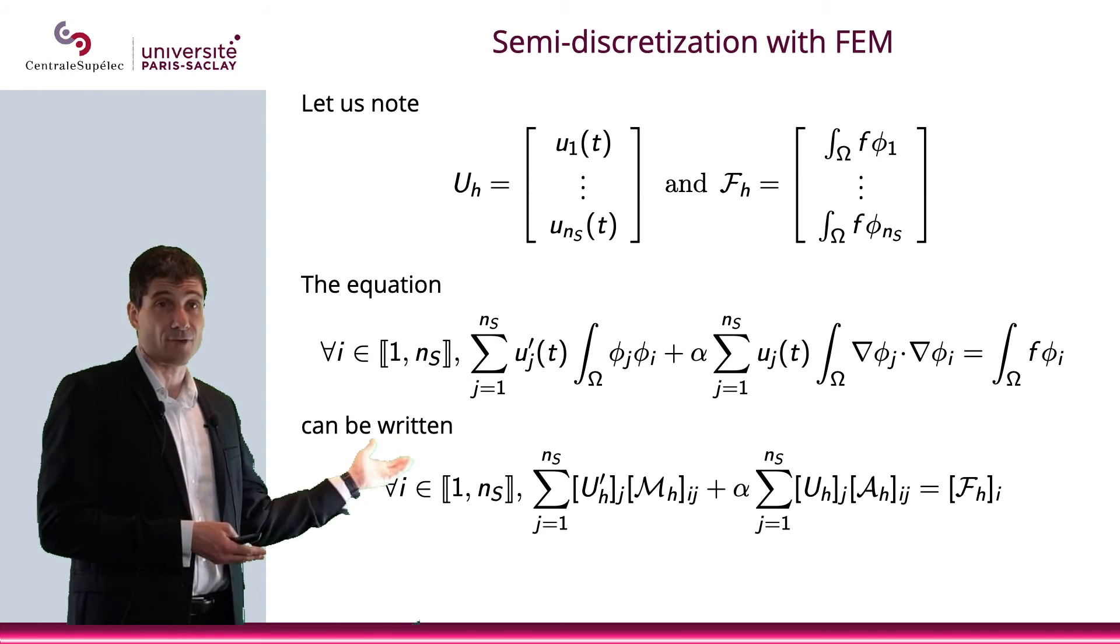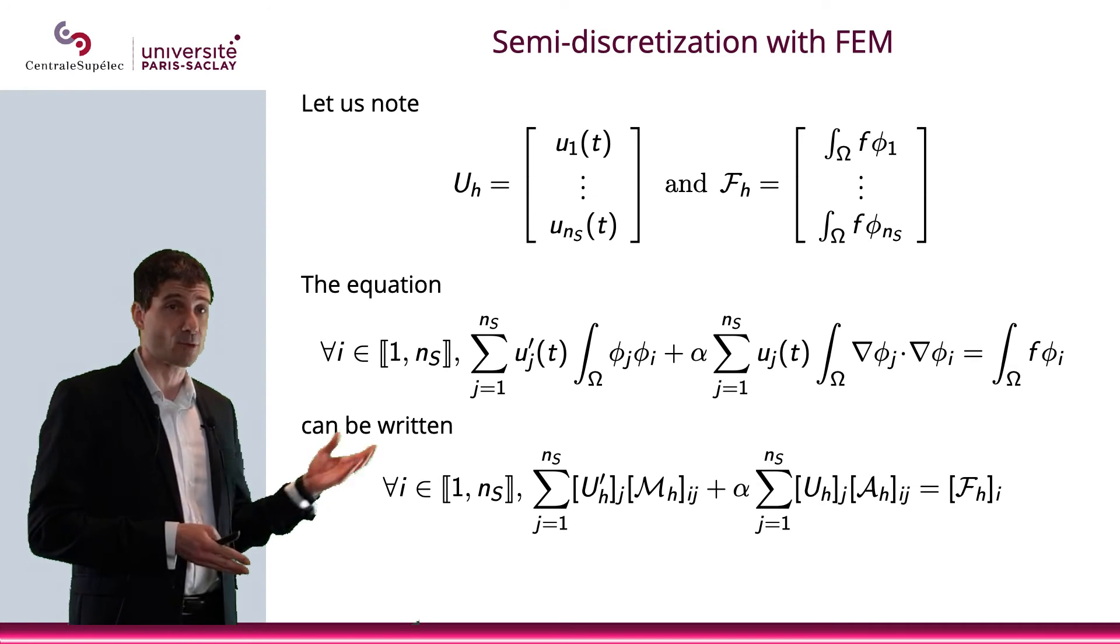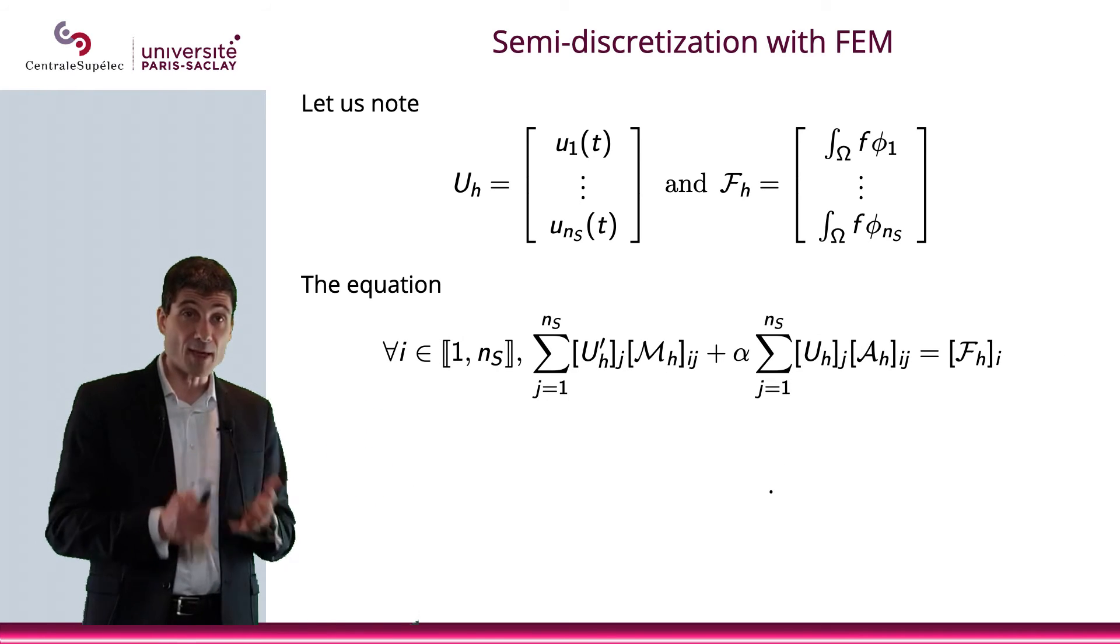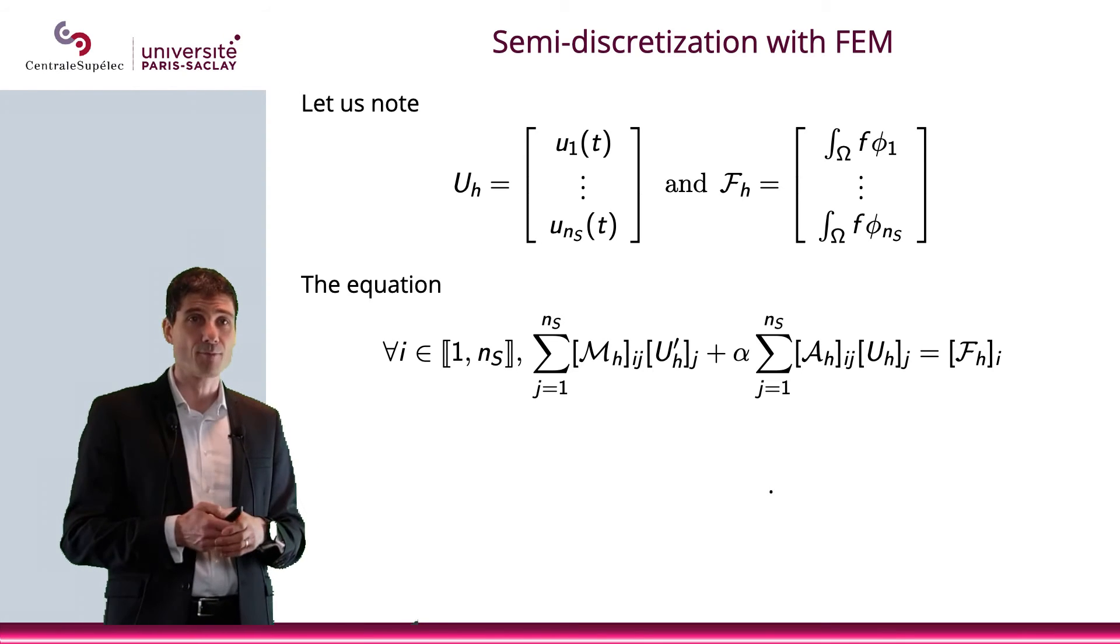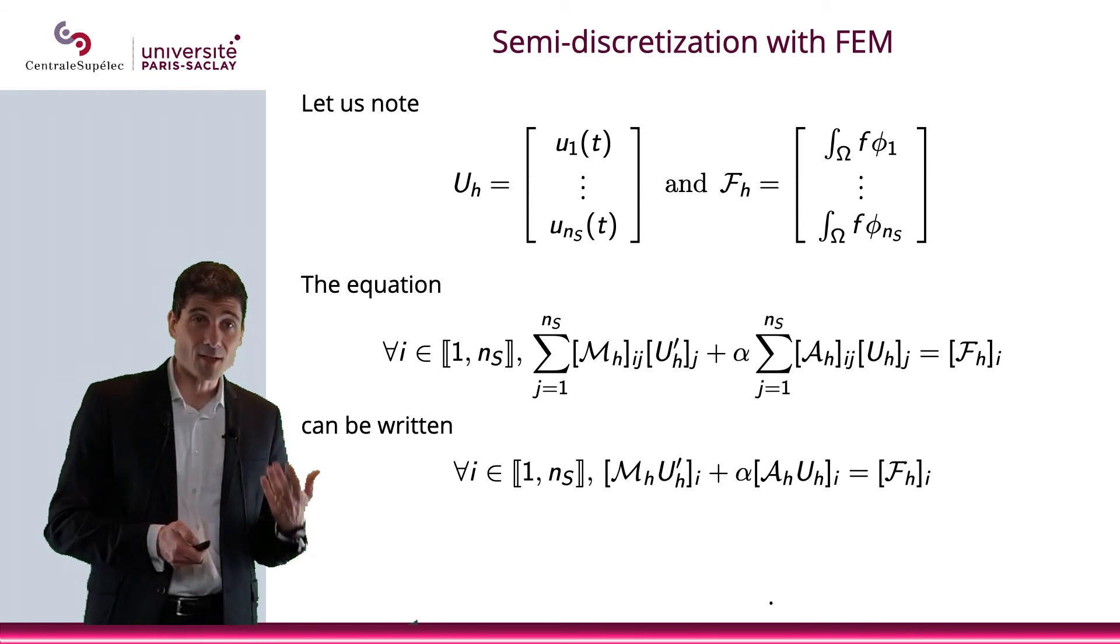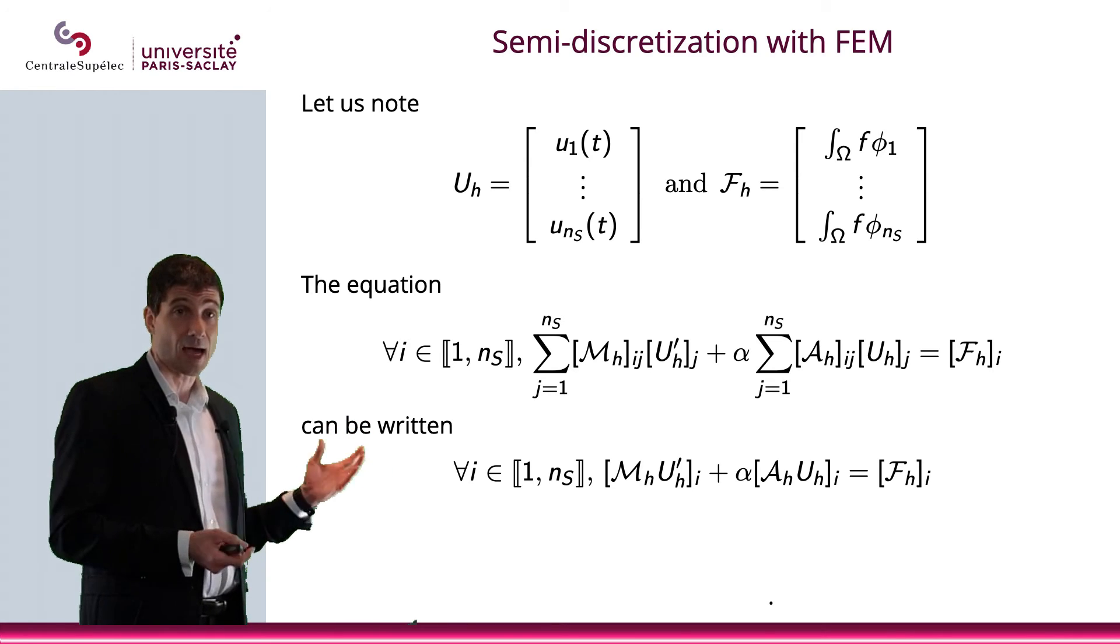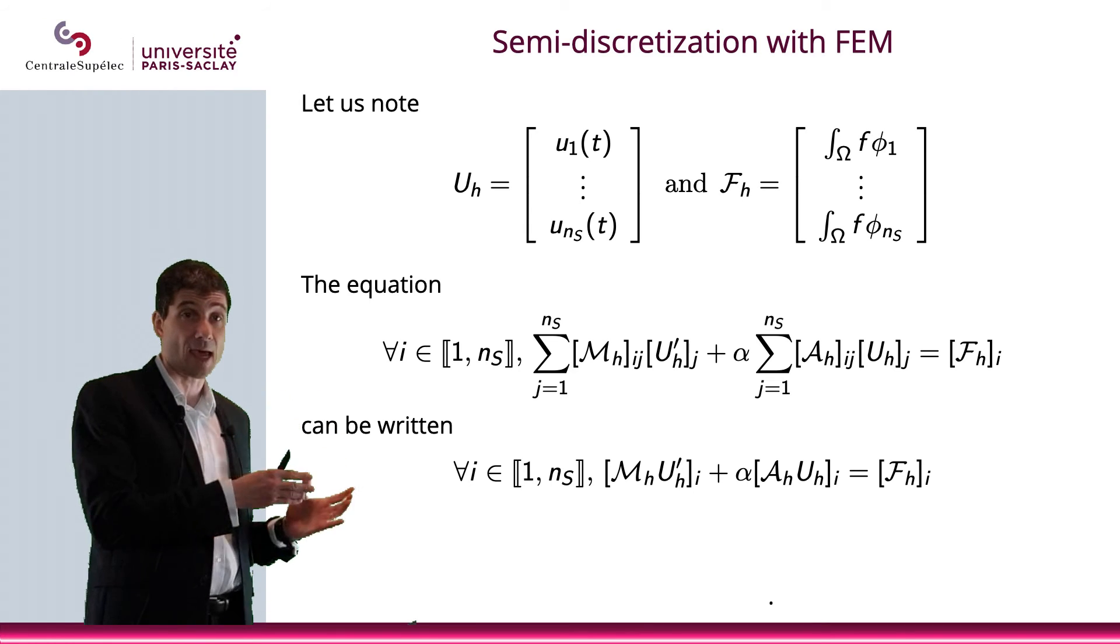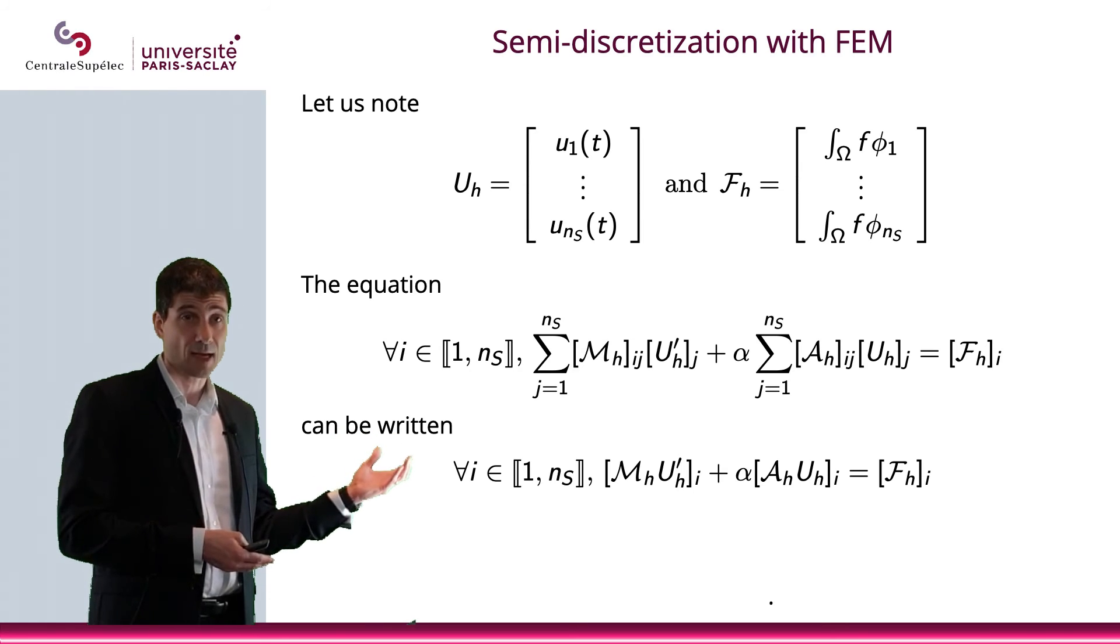And same thing for the second term, which we did before, you have the rigidity matrix A that comes into play. So here's what you get, so let me just write this here, which means, let me actually just permutate these two terms twice. And so what it means is that I can write this like this, basically as a product of matrices and a vector. So I do the product of M_h with u'_h, and the product of A_h and u_h. And this is, and then I'm taking the i-th line.